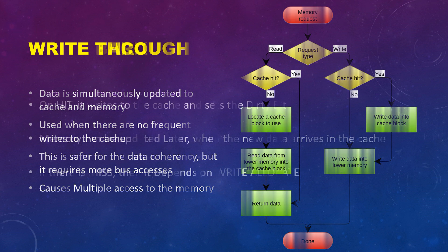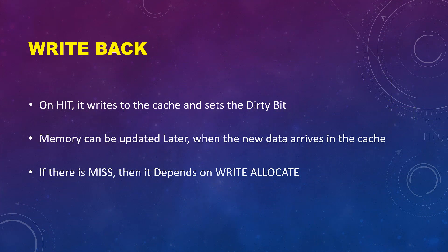Next is the write-back policy. If there is a cache hit, the master writes the data to the cache and sets the dirty bit. The data can be updated later in the memory — to be precise, the data will be written to the memory only when new data is about to be written into the cache. But if there is a cache miss, meaning the address to be written is not present in the cache, then it completely depends on the write-allocate policy.